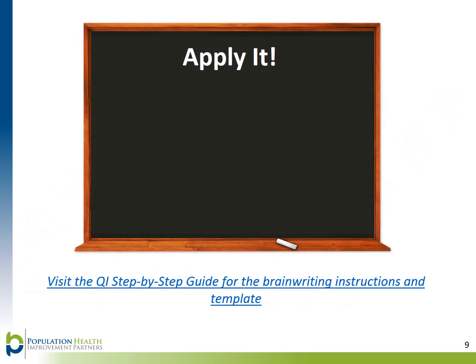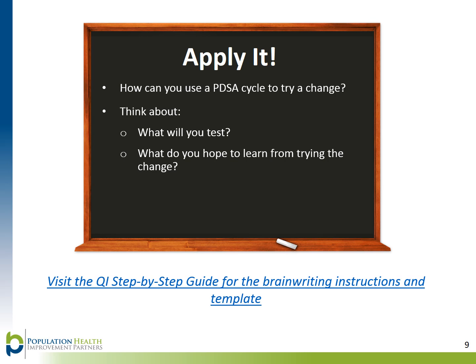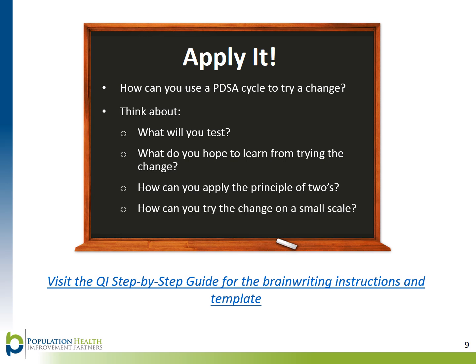Now, let's try it. Think about a change you want to make, either in your personal life or at work. How can you use the PDSA cycle to try the change on a small scale? Consider: What will you test? What do you hope to learn from trying the change? How can you apply the DROP 2 principle? How can you try the change on the smallest scale possible? I encourage you to use the provided link below to check out the Quality Improvement Step-by-Step Guide for links to the PDSA template worksheet and example. If you need additional assistance, please contact us at info@improvepartners.org for a consultation. Thanks for listening and happy testing!